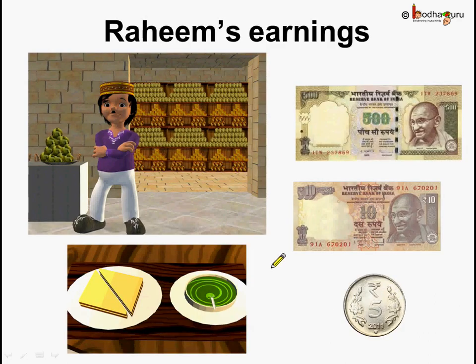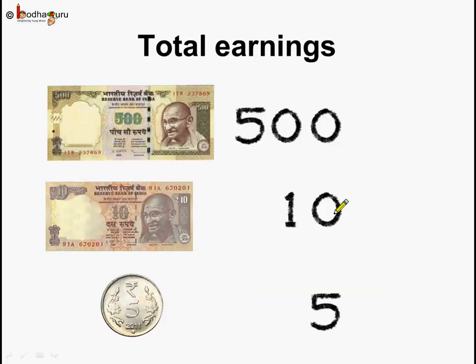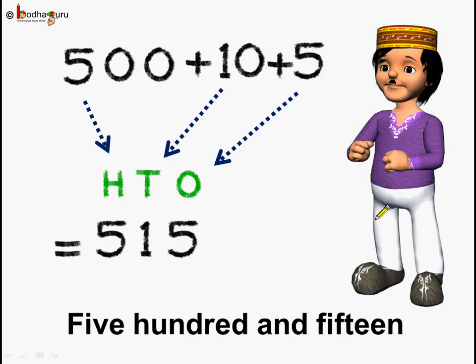Now coming to the next problem. Pola sold his sandwiches the whole day long. And in the evening, he checked his cash box. How much money was there? He saw a 500 rupee note, a 10 rupee note and 5 rupee coin. So how much did he earn that day? Let's see. 500 plus 10 plus 5. This was his earnings.